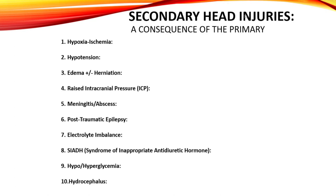Seizure disorders may develop after head trauma, particularly following severe injury. Electrolyte imbalance — disturbances in electrolyte levels impact brain function. SIADH, syndrome of inappropriate antidiuretic hormone, affects fluid balance and can be associated with head injuries. Hypo- or hyperglycemia — abnormal blood sugar levels can impact brain metabolism and function. Hydrocephalus, the accumulation of cerebrospinal fluid, potentially leads to increased ICP.